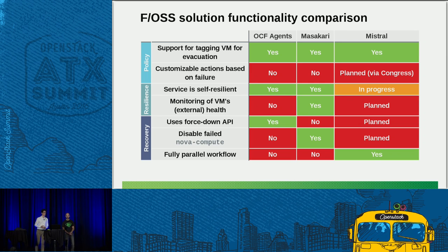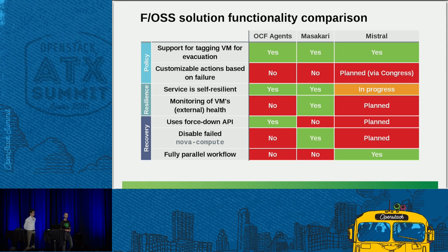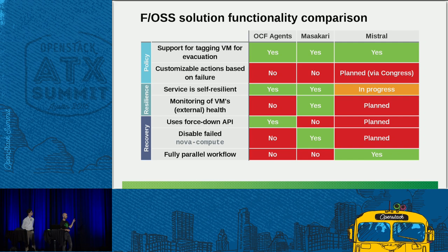This is a summary of the three solutions we talked about. I'd strongly recommend going and looking at these slides online to take longer to digest them. The highlights for us are: we're quite excited about the possibility of integrating the Mistral approach with Congress to do policy-based recovery, and there are two capabilities of Masakari which are very nice and which the best-of-breed solution in the future should definitely include. In general, these three solutions are really quite similar — they all do the main job pretty well, so there are other considerations worth thinking about beyond just functionality.